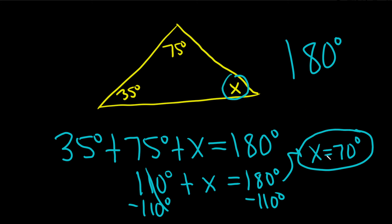And you can check your work by just taking all of these angles and adding them up. So if you do 70 plus 75 plus 35, it should give you 180. Good luck.